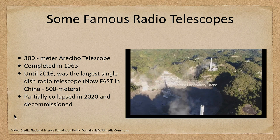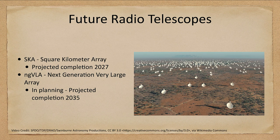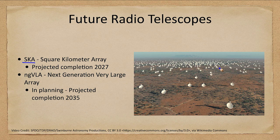Now let's look at the future of radio telescopes. There is the SKA — the Square Kilometre Array — projected to be completed in 2027. It will have a square kilometer of collecting area, with telescopes spread over much larger areas that when added together total one square kilometer of collecting area.